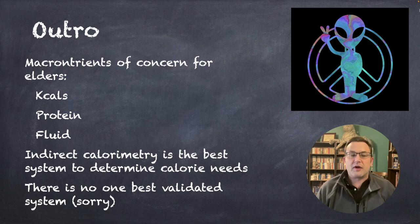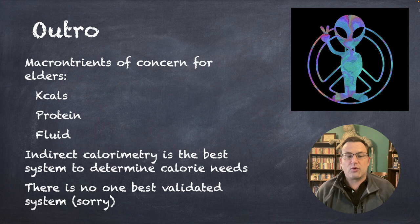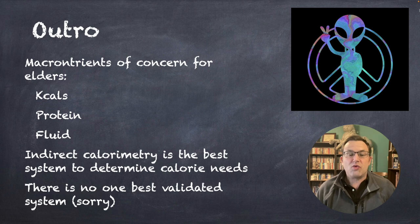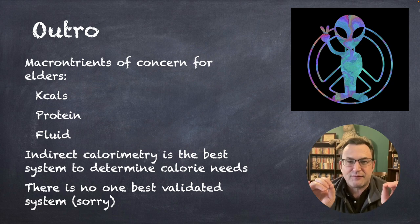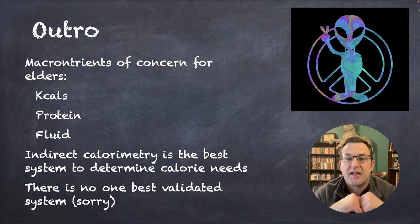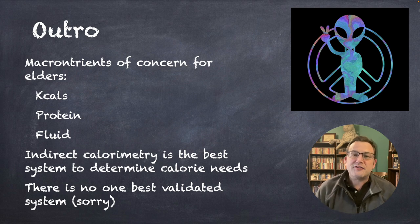So, macronutrients of concern for elders. This is generally what doctors want: the calories, the protein, or the fluids. Indirect calorimetry is best to determine needs, but you're probably not going to have it. So, there is no one best validated system. I'm sorry to tell you that. But, get used to that because that's going to come up quite a bit. Not everybody agrees on any of these. I feel like that's a bit of a bummer of an ending. But, that's it for now. I will catch you on the next one. We talk about proteins and fluids. Have a good one. Bye.